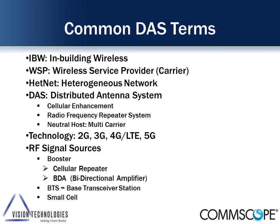There's lots of jargon, just like any other technology. You'll hear IBW, which stands for in-building wireless. You'll also hear WSP — what used to be called wireless carriers is now the wireless service provider: AT&T, Verizon, Sprint, and those folks. HetNet is a term you'll start hearing more and more. Generically it refers to a network connecting computers and devices with different operating systems. In the DAS world, it's a wide area network using macro cells, pico cells, or femto cells to offer wireless coverage inside or outside.